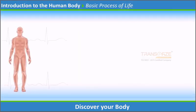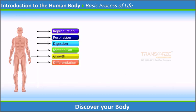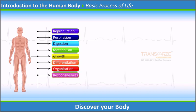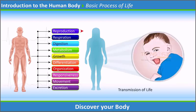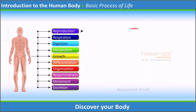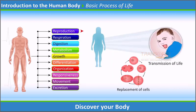Basic Process of Life: Our body functions systematically. The basic processes of life include reproduction, respiration, digestion, metabolism, growth, differentiation, organization, responsiveness, movement, and excretion. Reproduction is the transmission of life from one generation to another. Replacement of old cells by newly formed cells is also called reproduction. Both processes are very essential for the survival of the human race.